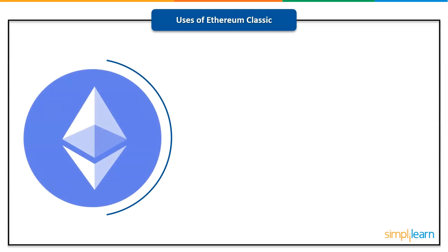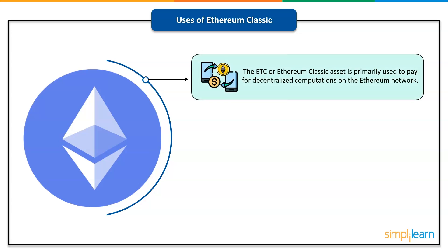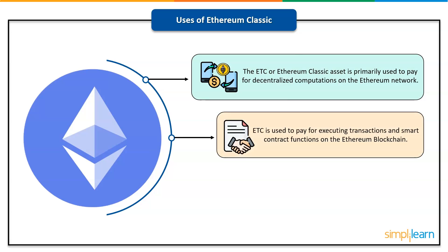Ethereum Classic has three major uses. ETC, like other cryptocurrencies, is primarily used to pay for decentralized computations on the Ethereum network. ETC is also used to pay for executing transactions and smart contract functions on the Ethereum blockchain. This is referred to as gas, and the fees associated with these actions are known as gas costs.